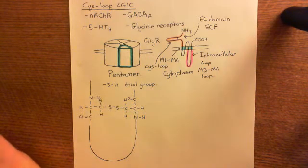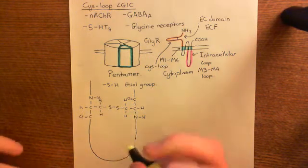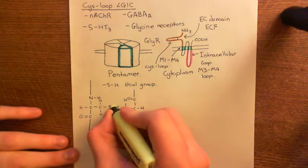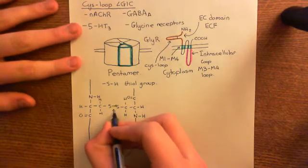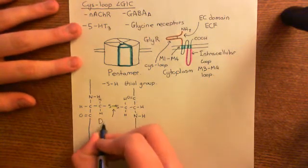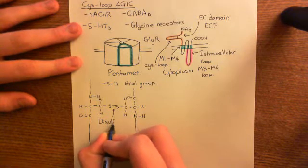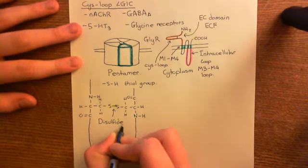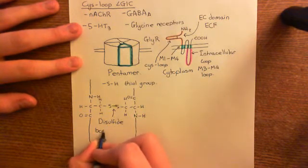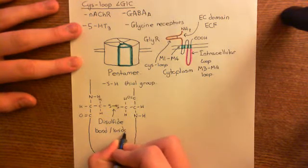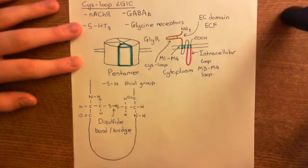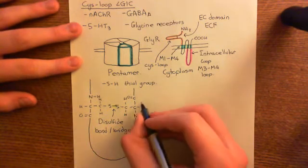Now, the important thing for holding together the structure of this cis loop is this disulfide bond. And I'm living dangerously. I'm using yellow. That probably doesn't show up at all. So, this is the disulfide bond, also known as a disulfide bridge. And this is what is involved in holding the cis loop structure together.